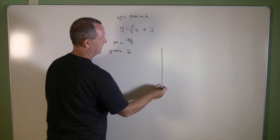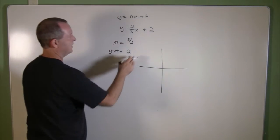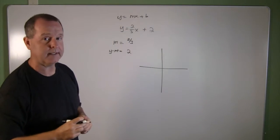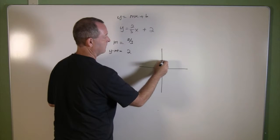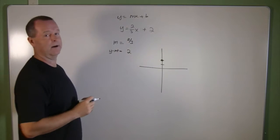Let's graph it out. First thing I want to do is find my starting point, which is my y-intercept, and my y-intercept's up at two. So I know that I have a point right there.